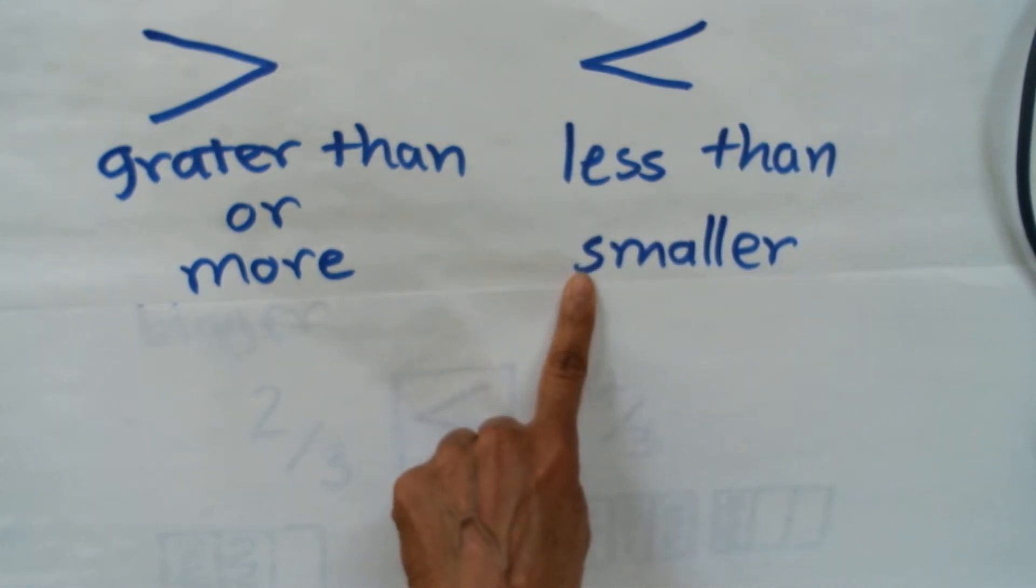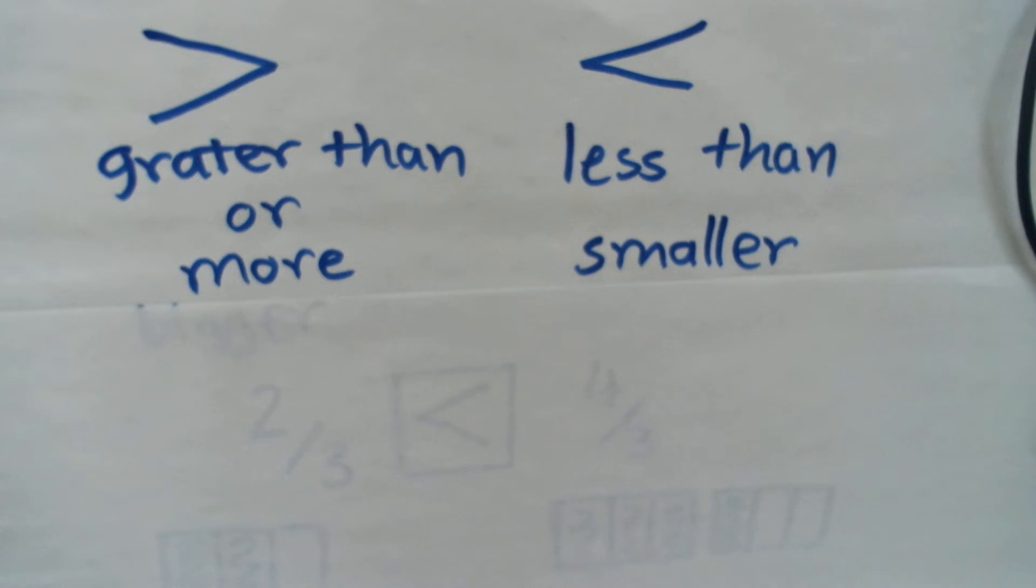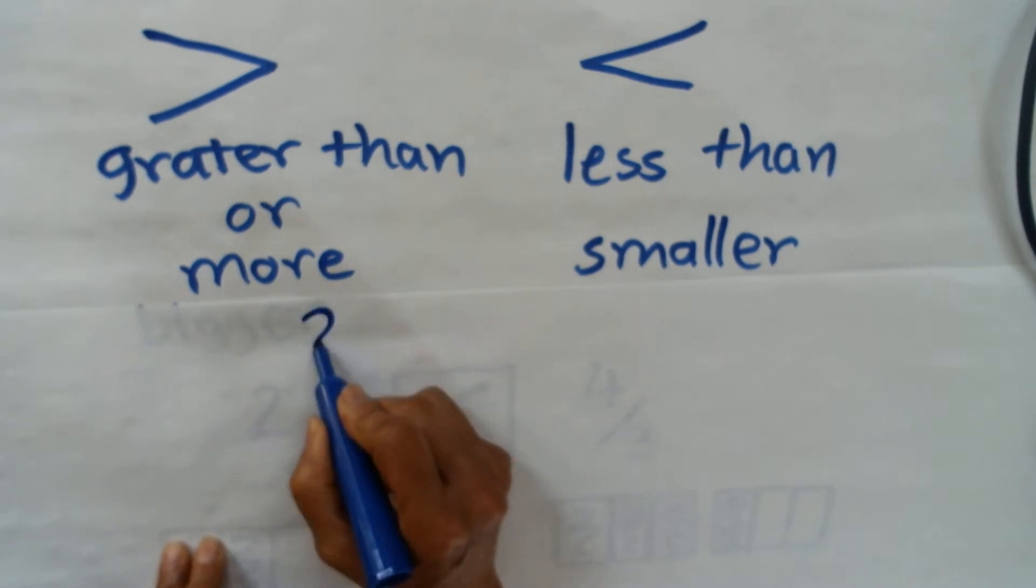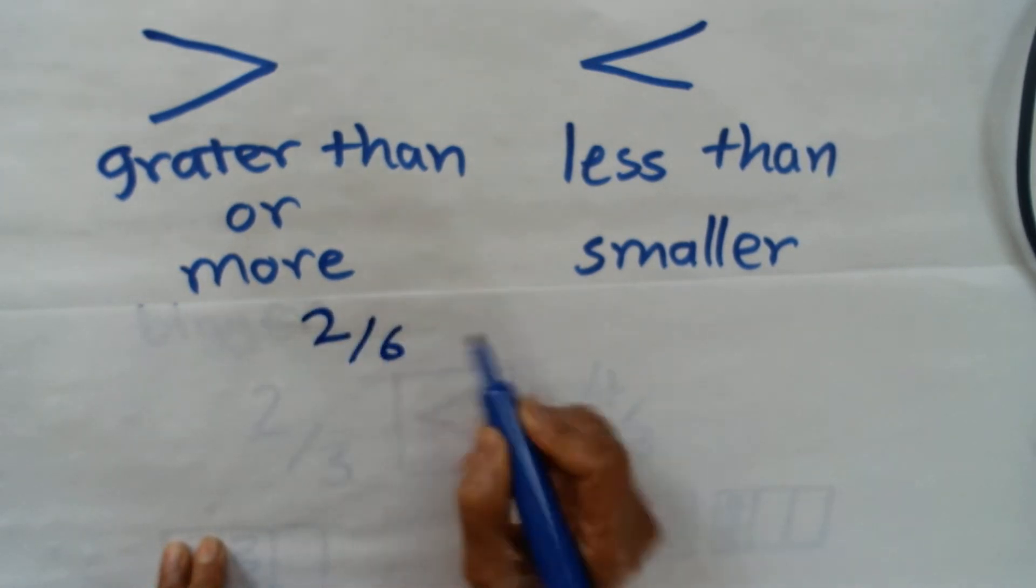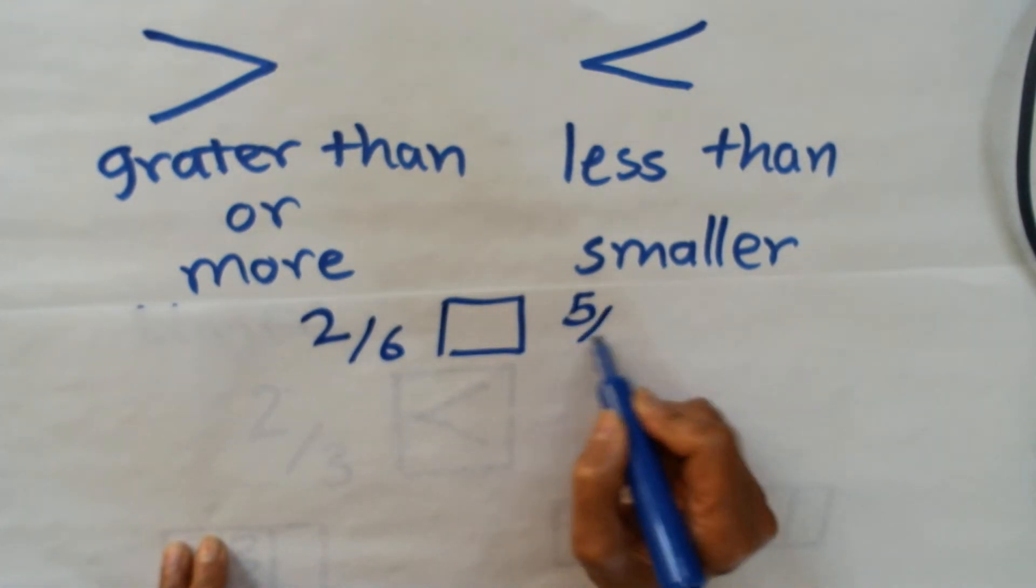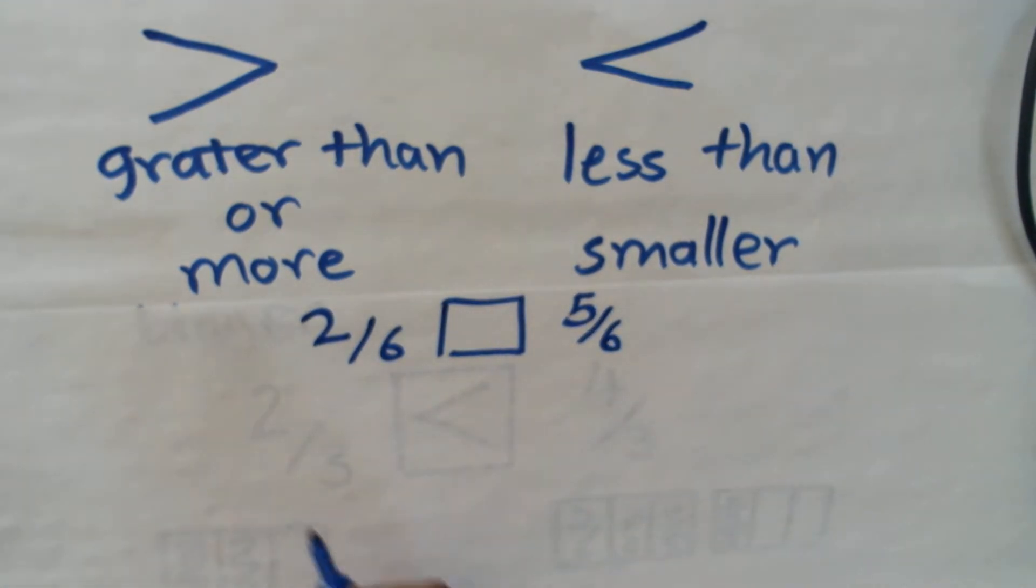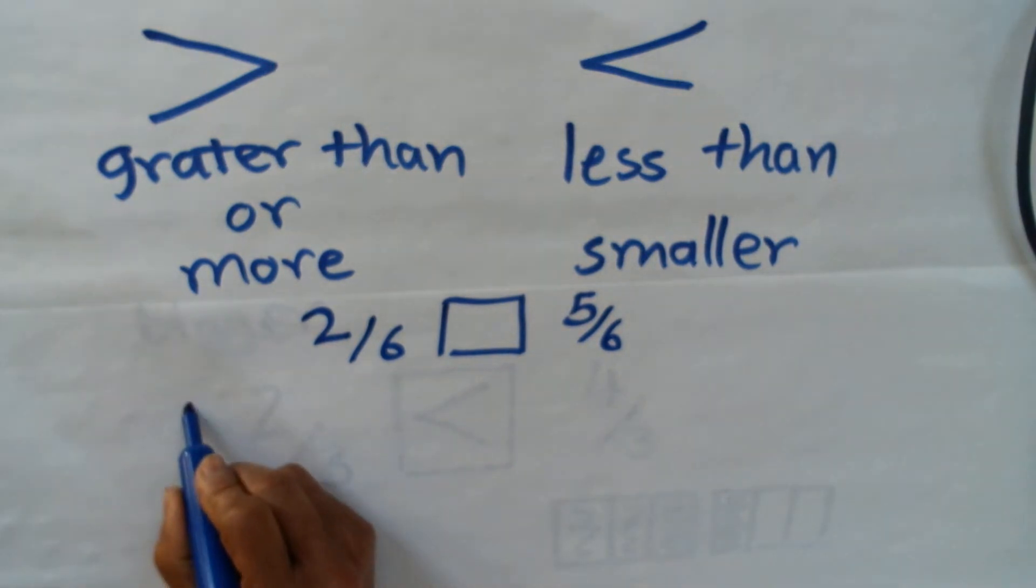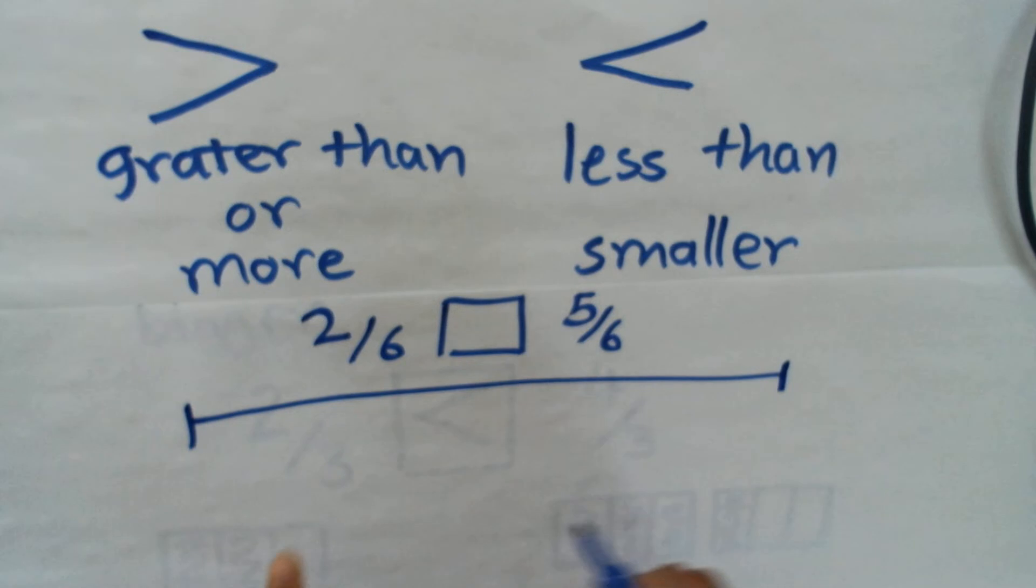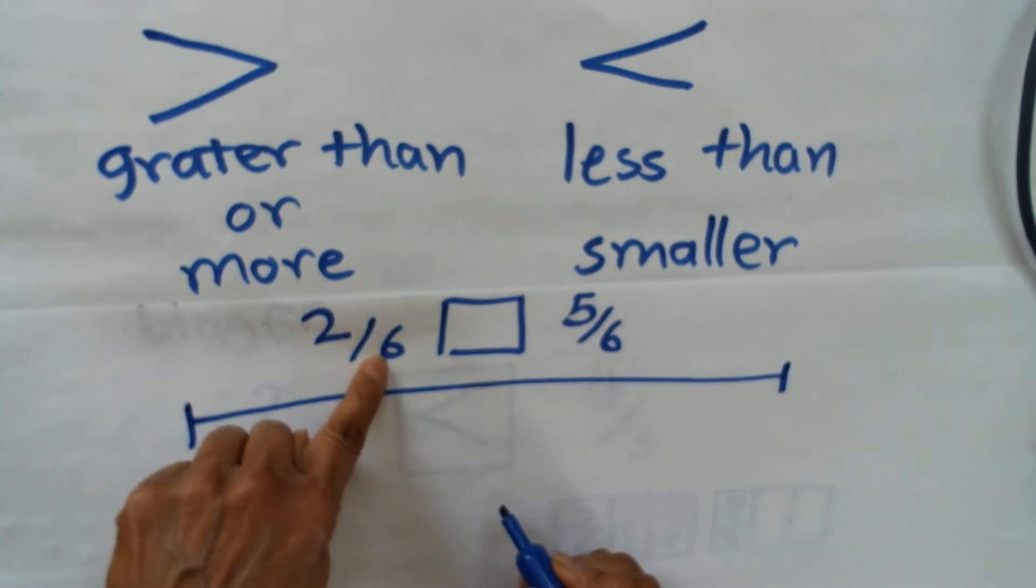Today we are going to compare two fractions using a number line. Let's see, our fractions are 2/6 and 5/6. What you can do is build the number line. My denominator is 6, so...